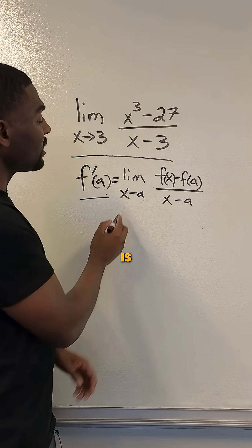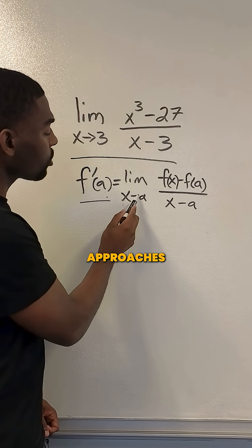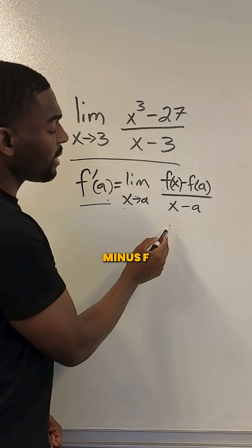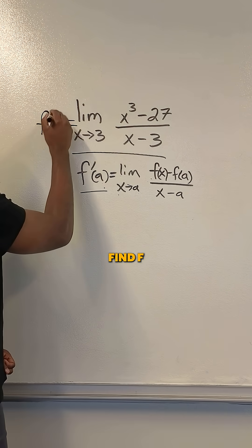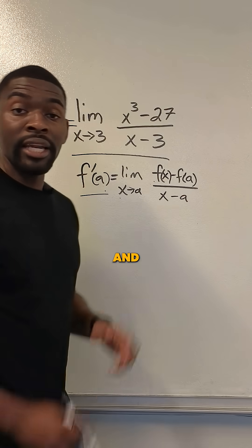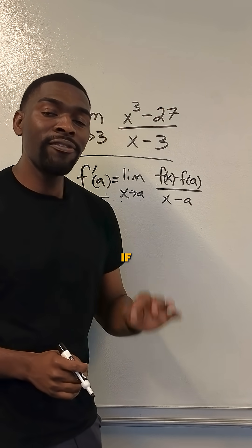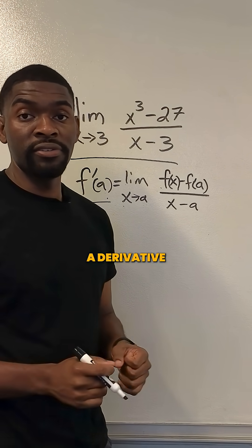Clearly, f prime of a equals the limit as x approaches a of f of x minus f of a over x minus a. So this problem is simply asking us to find f prime of 3. And the only way you're going to figure that out is if you know all of the definitions of a derivative.